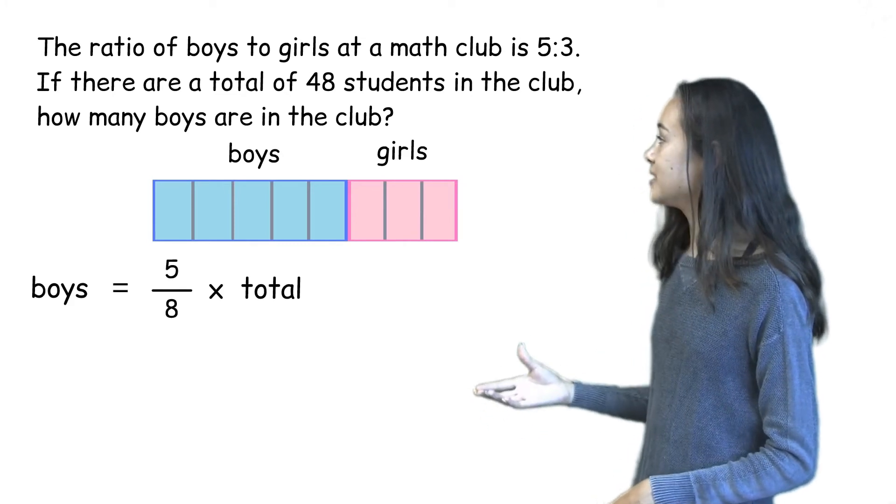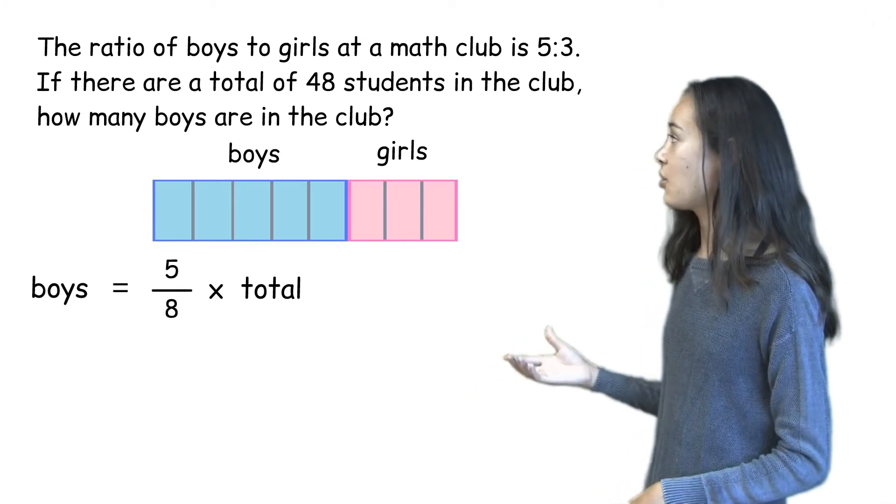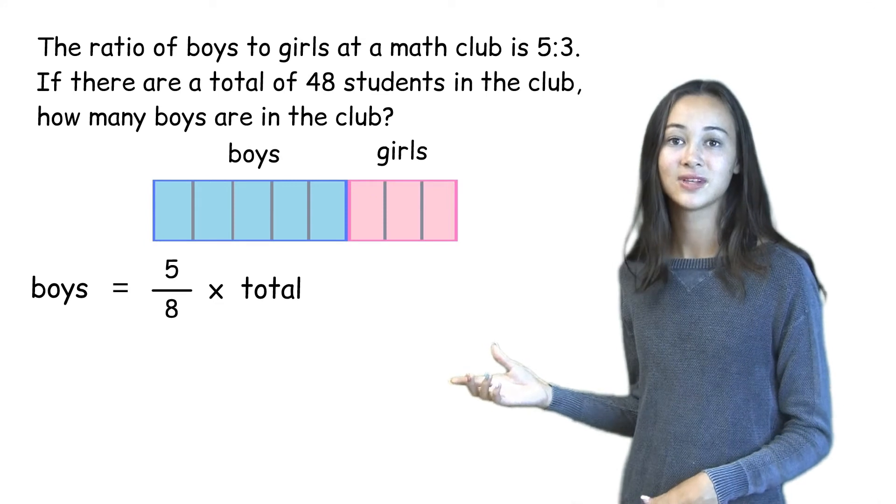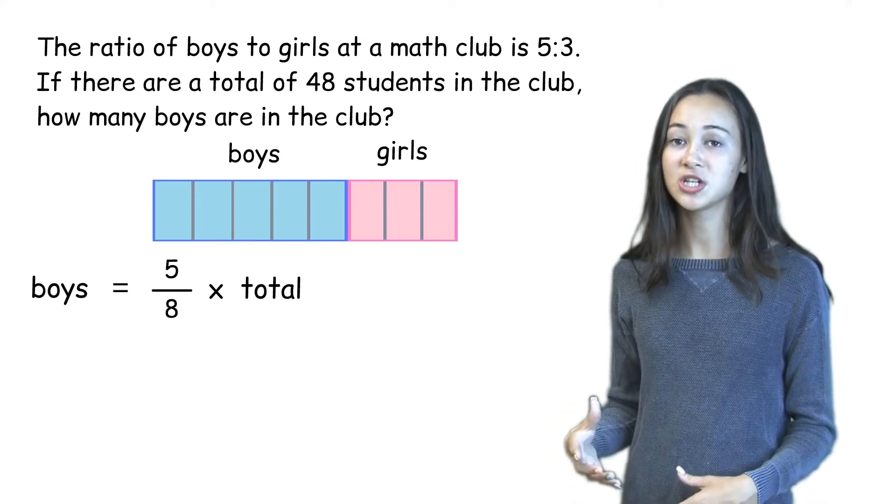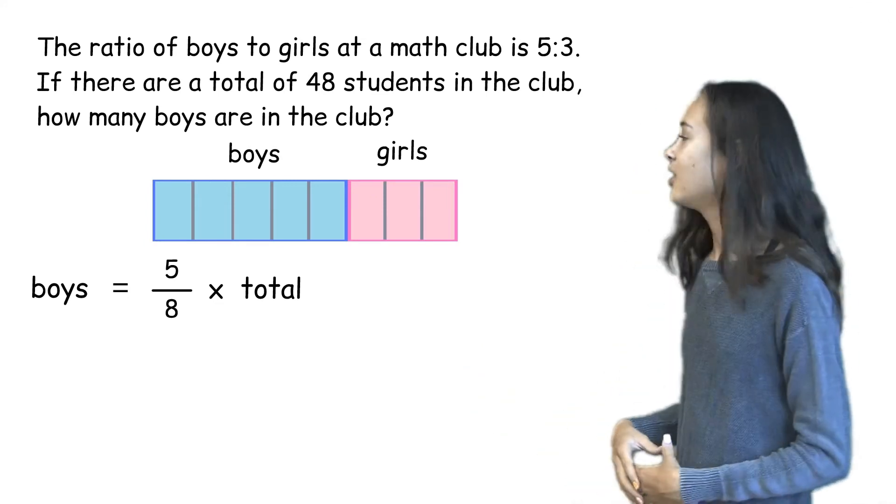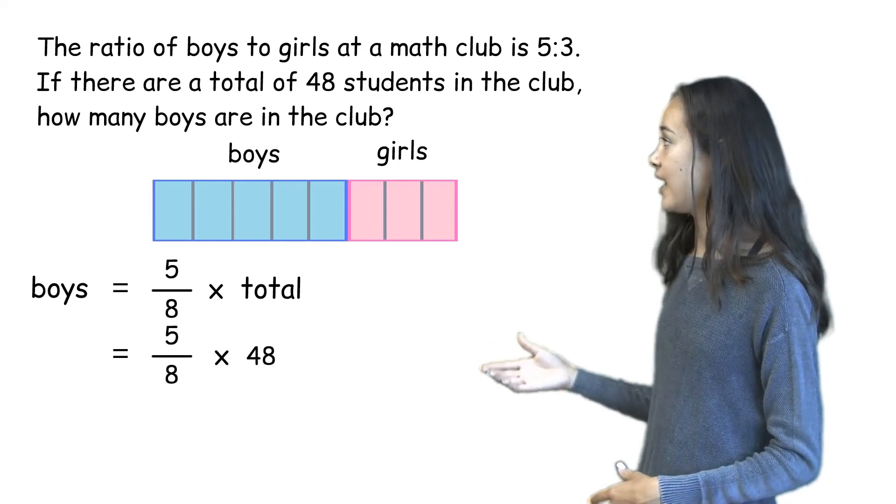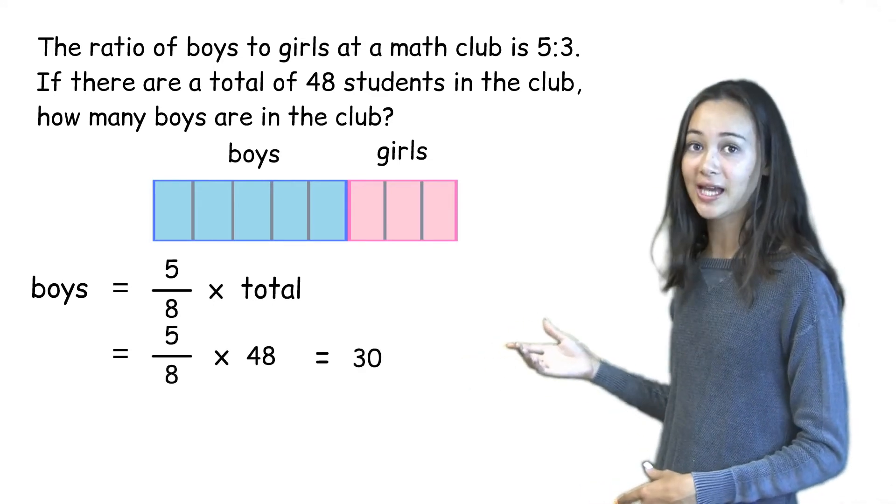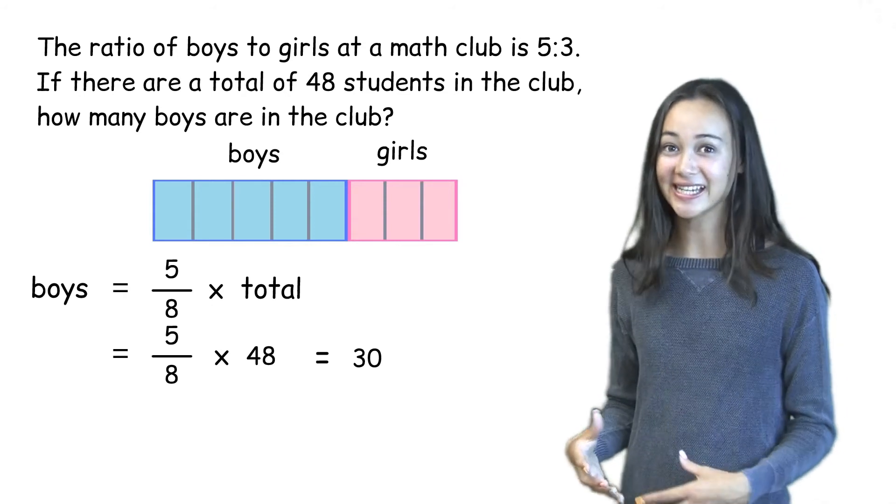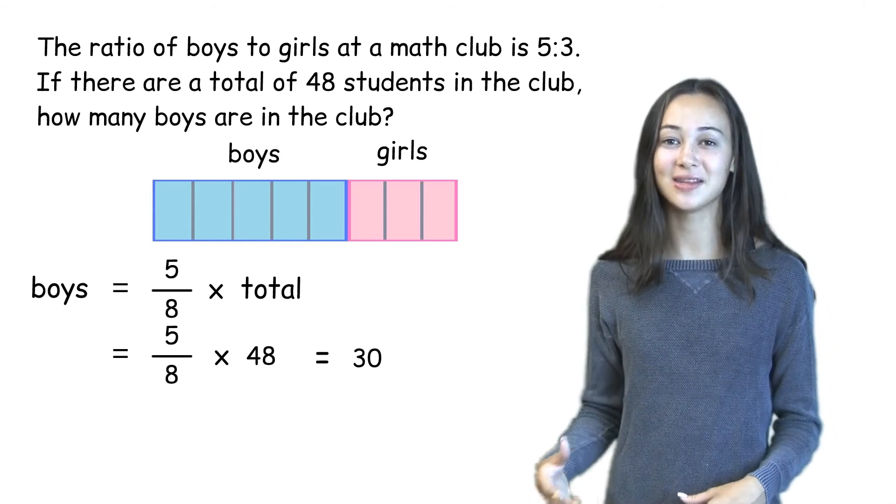The number of boys is 5 eighths of the total number of students. And since the total of students is 48, to find the number of boys, we can do 5 eighths times 48, which is 30. So there are 30 boys in the math club.